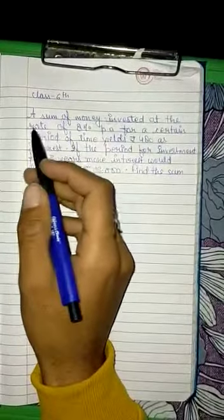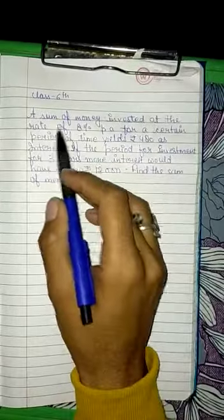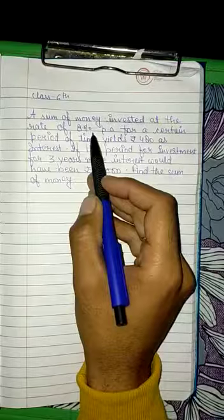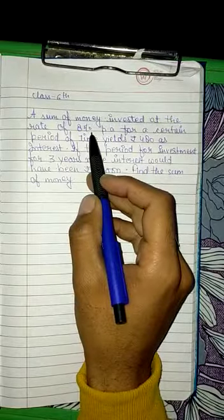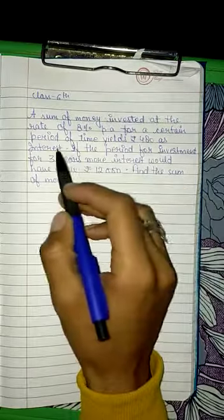In today's video, we will study an example about a sum of money invested at the rate of 8% per annum. The principal is not given, but the rate is 8% per annum for a certain period of time, which is also not given. The interest earned is rupees 480.